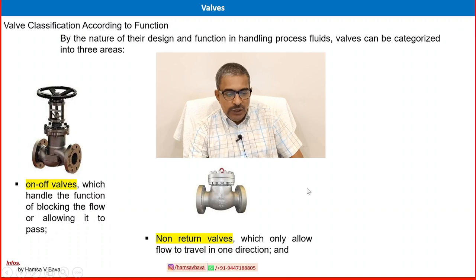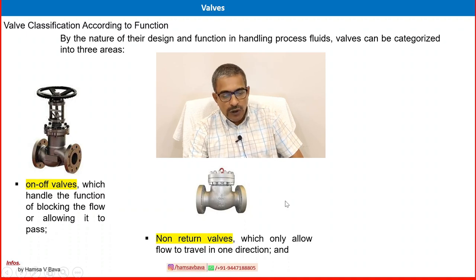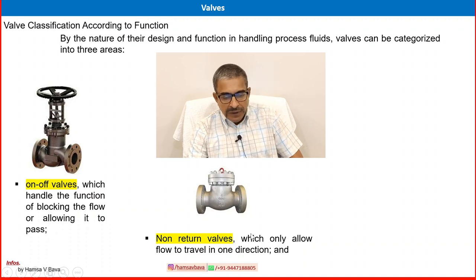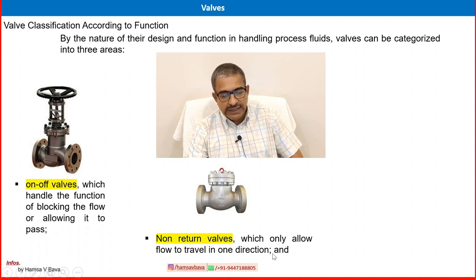The second type is the non-return valve, also called a check valve, which provides only one-direction flow. You can see there is no handle — it is an automatic valve. It will open only in one direction of flow, allowing flow to travel in one direction only.